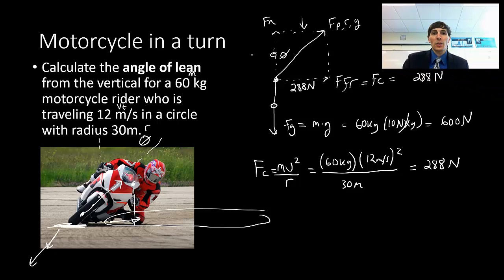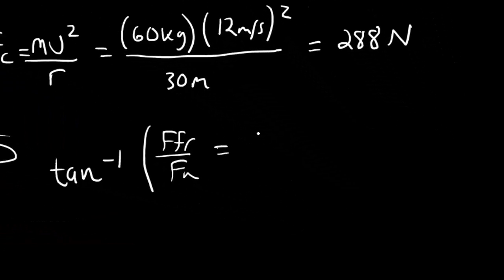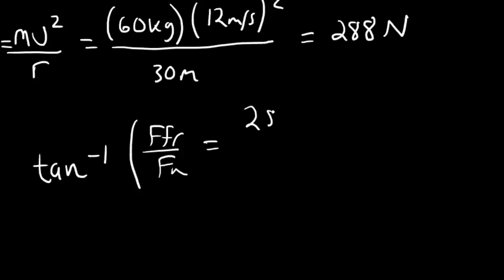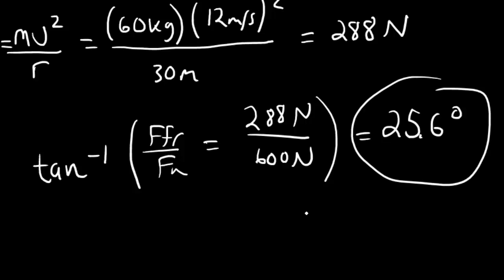So what I can do now that I know that this is 600 is I can use a function that deals with the opposite and adjacent sides of this triangle. And that function is tangent. When I take the arctangent of opposite over adjacent, which was our force of friction over our normal force, which is just equal to my 288 newtons over my 600 newtons, we're going to get an angle of 25.6 degrees measured from the vertical is equal to our theta.